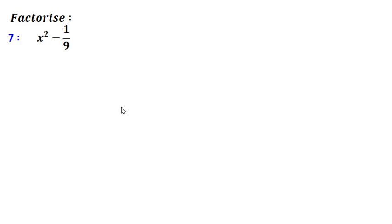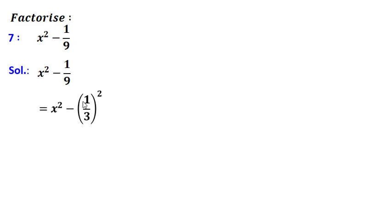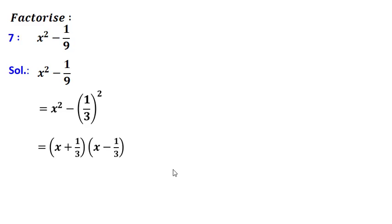Seventh question is x squared minus 1 upon 9. The second term, 1 upon 9, is the square of 1 upon 3. So I will write this as x squared minus (1/3) squared, which gives (x + 1/3) into (x - 1/3).